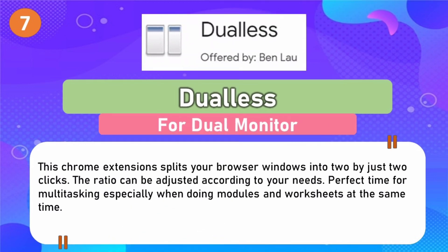Number 7: Dualis — used for dual monitor. This Chrome extension splits your browser window into two with just two clicks. The ratio can be adjusted according to your needs. Perfect for multitasking, especially when doing modules and worksheets at the same time.